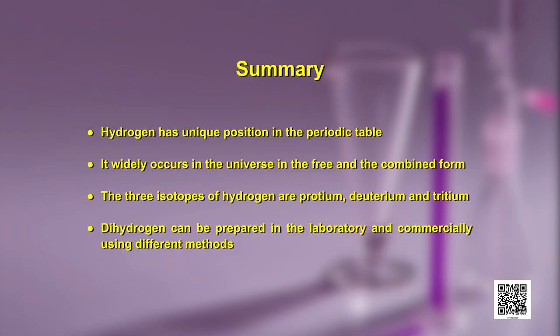Now having seen different methods of production, let us summarize what we have learned in this program. Hydrogen has a unique position in the periodic table. It widely occurs in the universe in both free and combined forms. The three isotopes of hydrogen are protium, deuterium, and tritium. Dihydrogen can be prepared in the laboratory and commercially using different methods.